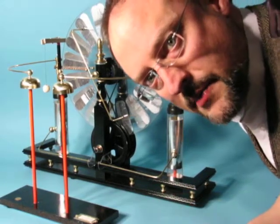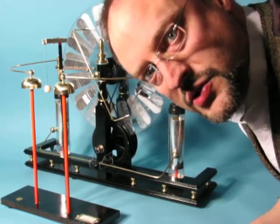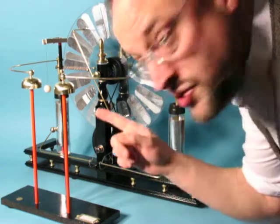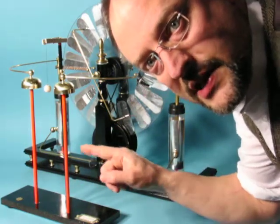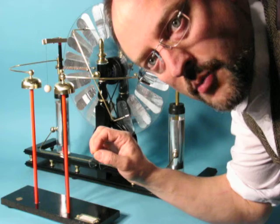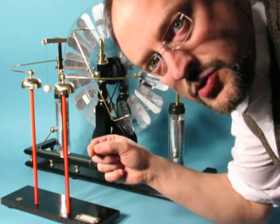What we have here is a popular demonstration in electrostatics known as Franklin's Bells. It's two brass bells on insulating rods with a small wooden ball suspended by a thread between them.